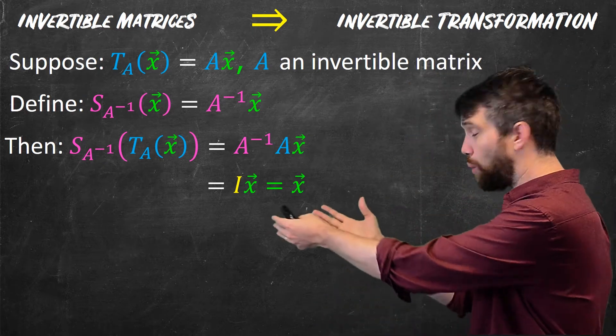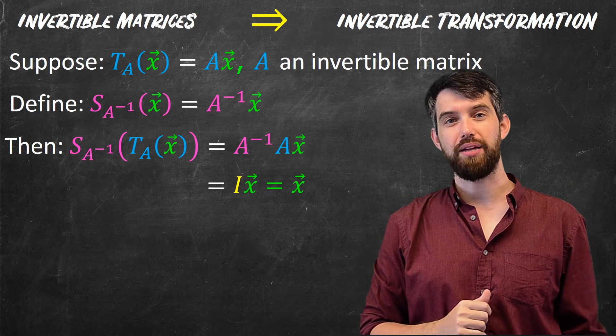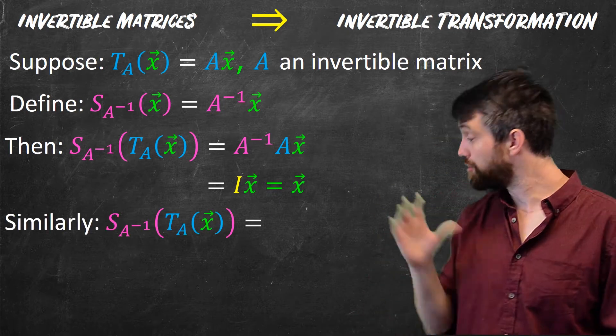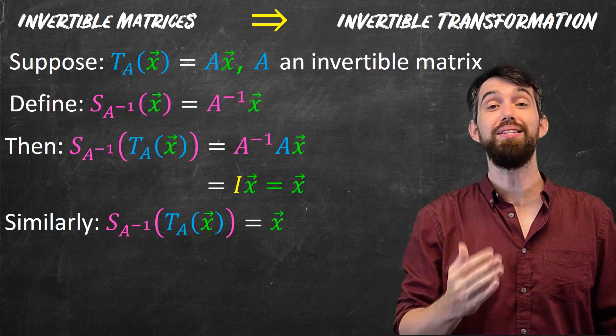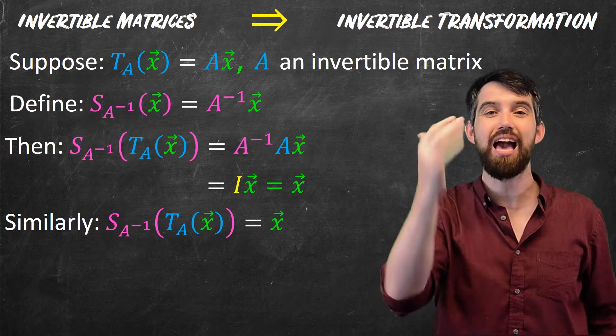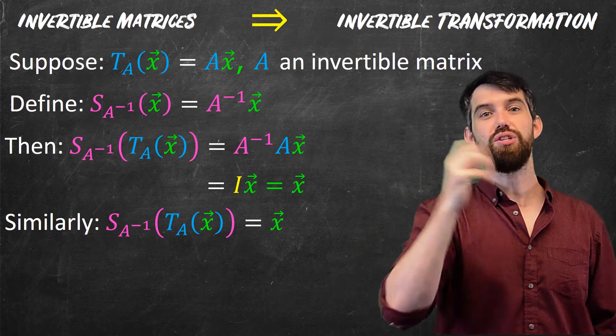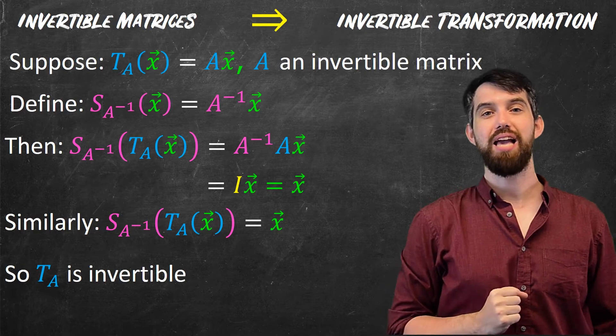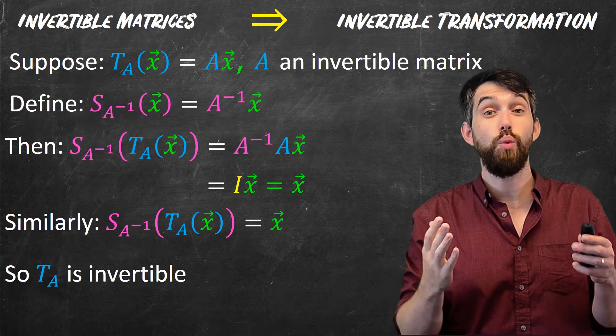So indeed, when I compose them in this way, I get back the vector x. And then I'll let you check that the other direction is also true. So indeed, either way I compose them, I get back to the beginning. This is a good inverse to the transformation T, and so my T_A is invertible. So that's the one side.